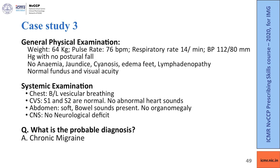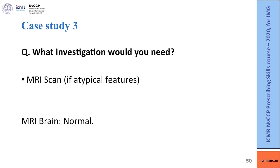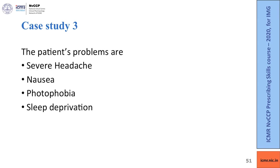On general physical examination, nothing remarkable. Fundus and visual acuity are normal. Systemic examination shows no abnormality. The probable diagnosis is chronic migraine. The patient's problems are severe headache, nausea, photophobia and sleep deprivation.